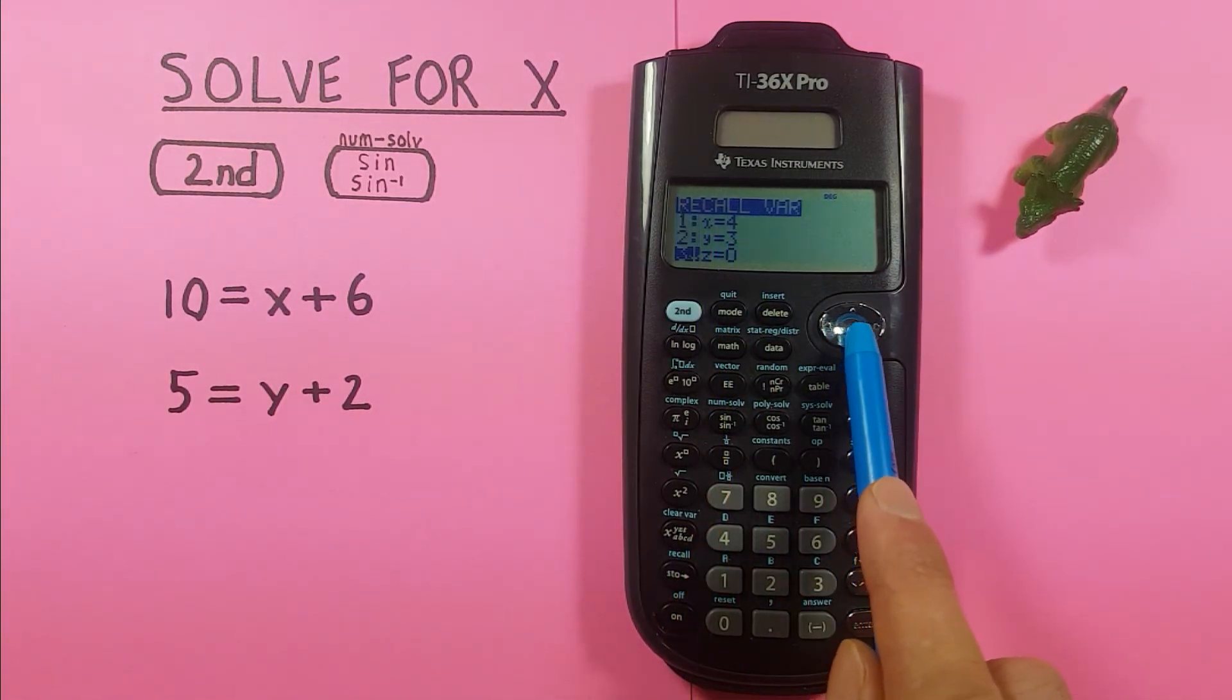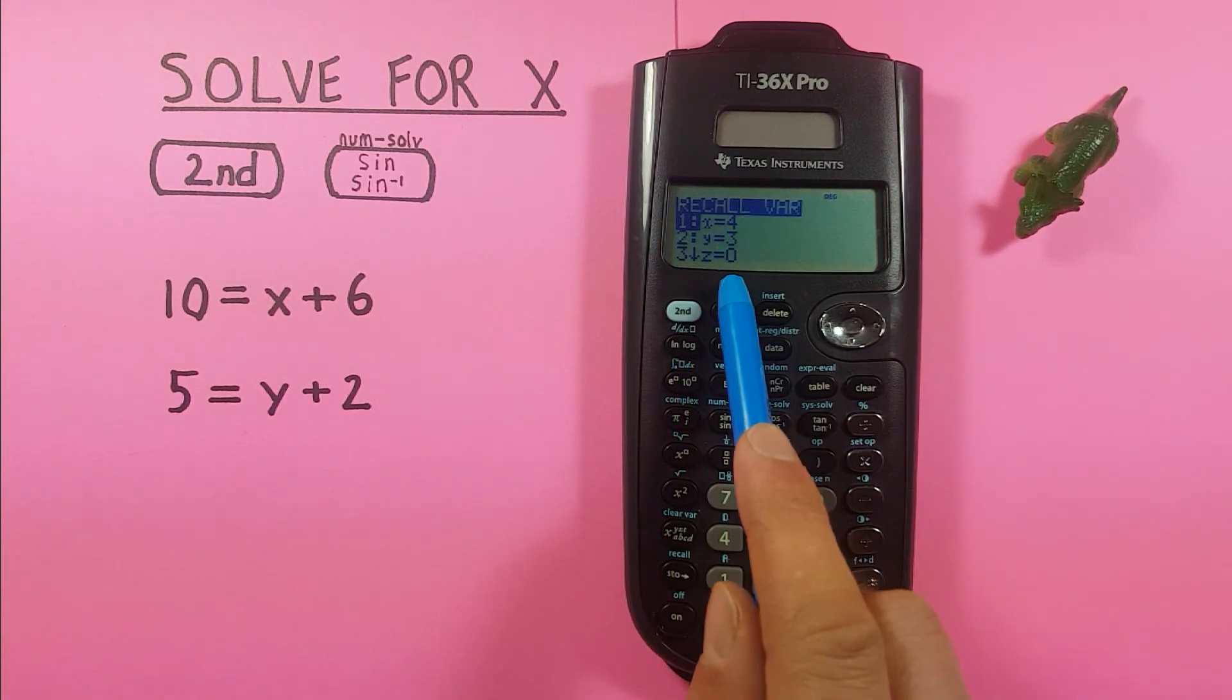So if you look, you can see we have 1, 2, 3, 4, 5, 6, 7, 8—8 possible slots we can store on this calculator.